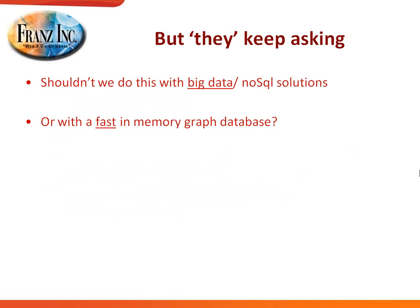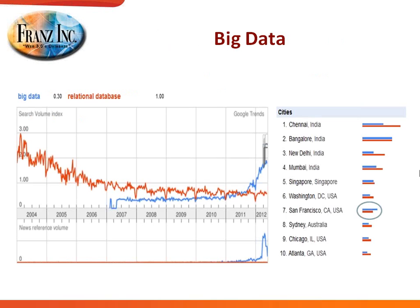We at Franz sell a semantic database, but every time we talk to customers about projects, they've read all the literature and they always ask: why can't I do this with a big data or NoSQL solution? Or shouldn't I be doing this with a fast in-memory graph database? That's the question I get most when talking to potential customers. So let me cover these two other classes — first, about big data.